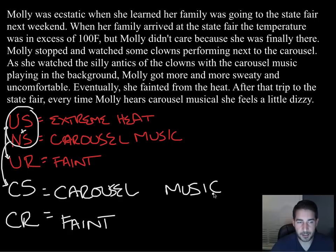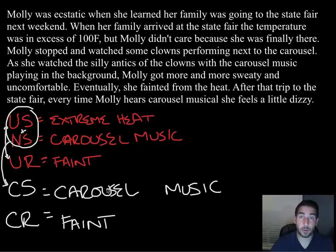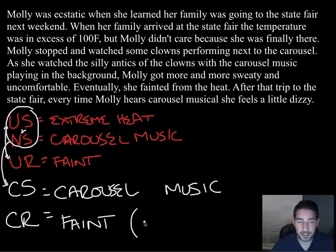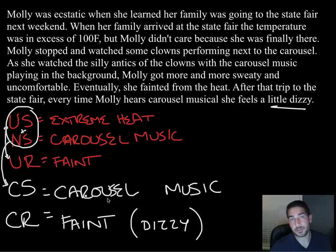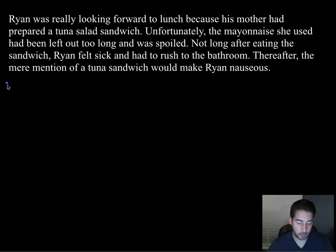The neutral stimulus always becomes the conditioned stimulus. So carousel music, which used to be neutral, is now the conditioned stimulus. Since it was paired with the extreme heat that caused fainting, the carousel music now causes the precursor to fainting — feeling dizzy. And as the story says, she feels a little dizzy. There's one more example — let's do it quick.